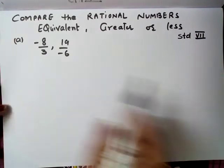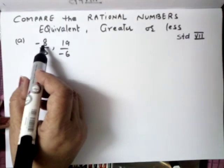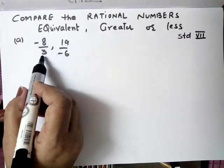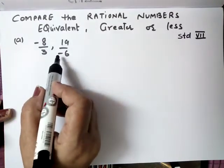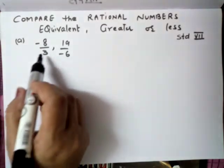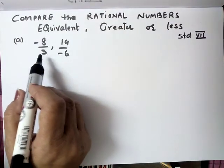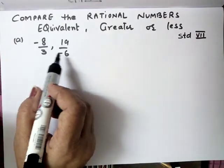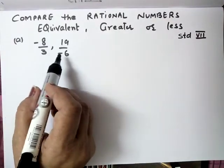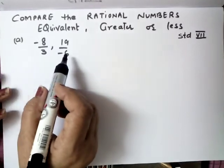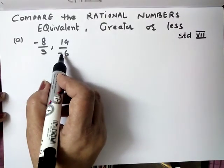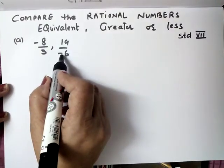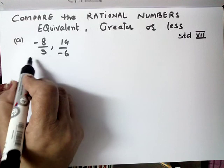First of all, this is one example I have taken: minus 8 upon 3 and 19 upon minus 6. Sabse pehle jab bhi comparison karni hai, you have to change into its standard form. Aur standard form ka matlab hota hai ki denominator must be positive.